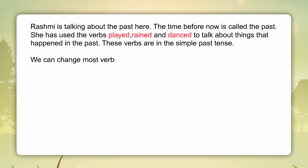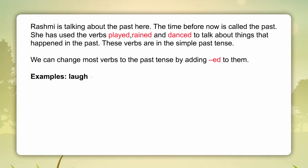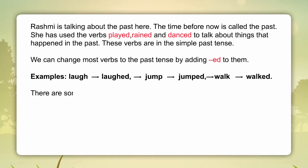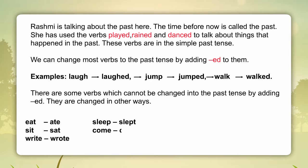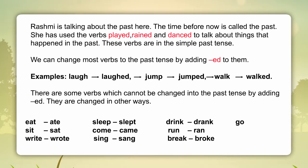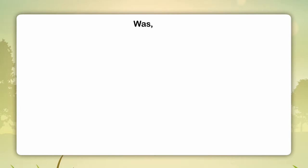We can change most verbs to the past tense by adding -ED to them. Examples: Laugh — Laughed, Jump — Jumped, Walk — Walked. There are some verbs which cannot be changed into the past tense by adding -ED. They are changed in other ways: Eat — Ate, Sit — Sat, Write — Wrote, Sleep — Slept, Come — Came, Sing — Sang, Drink — Drank, Run — Ran, Break — Broke, Go — Went, Stand — Stood, Make — Made, Is/Am — Was, Are — Were.